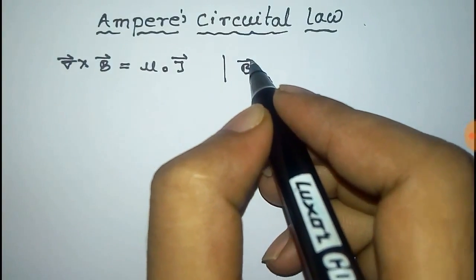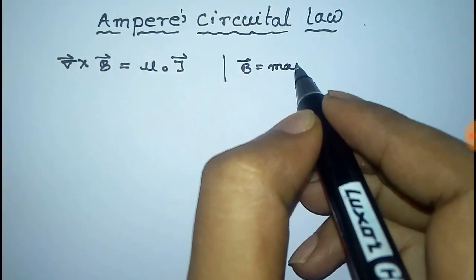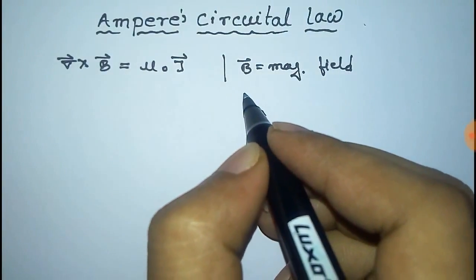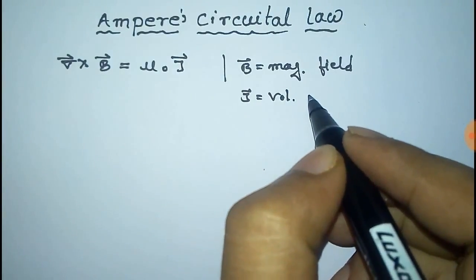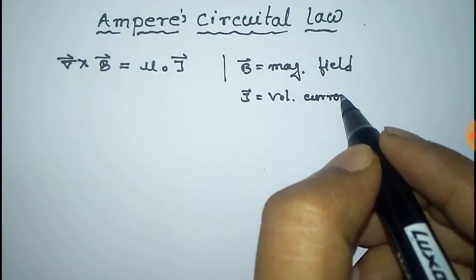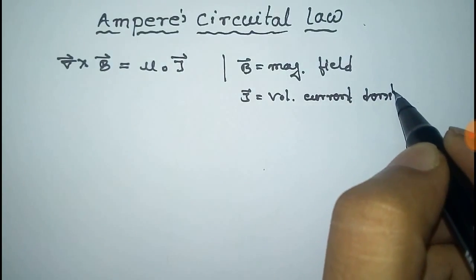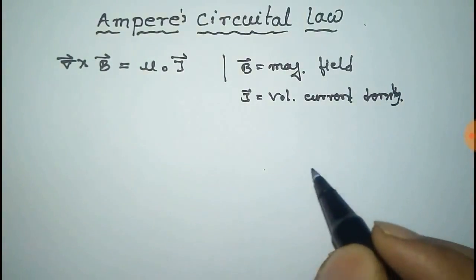Here B is the magnetic field and J vector is the volume current density. For this relation you can visit our video on the derivation of curl B equal to μ₀ J vector and the link is given in the description.